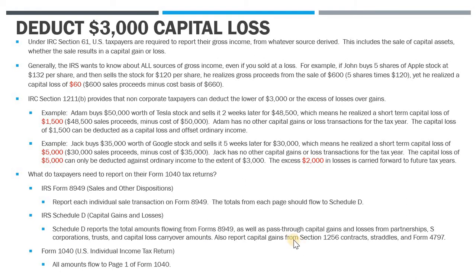Schedule D also reports gains from straddle contracts, Section 1256 futures contracts, and if you have a Form 4797 for the sale of property used in a trade or business that has capital gain, that will be included as well. Once Schedule D is completed, all those amounts flow through to Form 1040, where they're either subject to tax or, in a case like Jack's, the $3,000 capital loss offsets ordinary income as a $3,000 deduction on Form 1040.